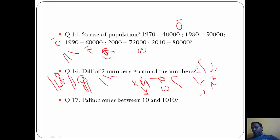Palindromes between 10 and 1010. This is simple but little bit lengthy. From 10 to 100: 11, 22, 33, 44, 55, 66, 77, 88, 99 - that's 9 numbers. From 101, 111, 121 and so on, from 100 to 1000 it comes 10 into 9, that is 90. Between 1000 to 1010 there is only one number, 1001. So 90 plus 9 plus 1 equals 100 palindromes total.